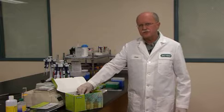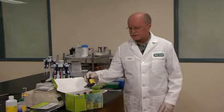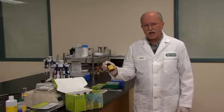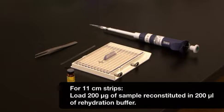The first step is to prepare the sample and the reagents according to the instructions in the manual. The components of the rehydration buffer are urea, CHAPS, DTT, Ampholite, and Bromophenol Blue. I will be loading 200 micrograms of E. coli sample that has been reconstituted in rehydration buffer onto an 11 cm pH 4-7 IPG strip.